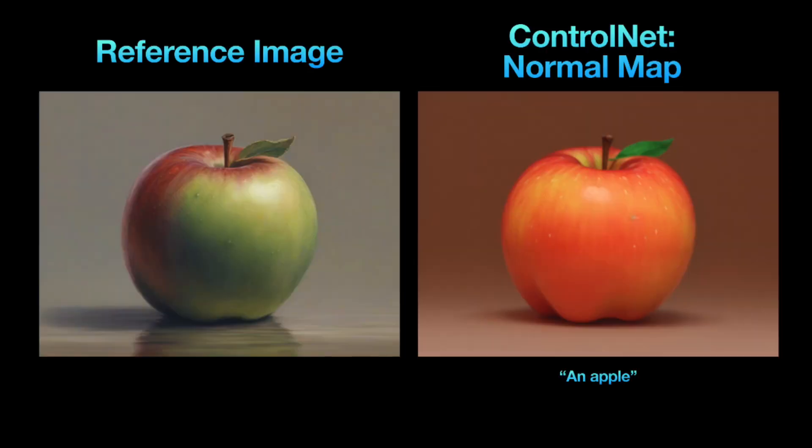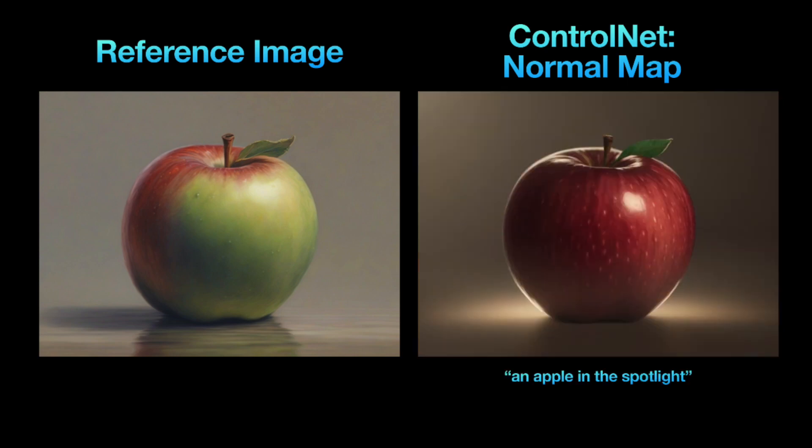The normal map in ControlNet looks at a flat surface, figures out the direction each element should point, and gives you more control over light reflections — it mimics where reflections should be. This is handy for highlighting the main focus of an image. When I used the 'An Apple' prompt with the Normal Map option, Leonardo completely changed the lighting while keeping the apple's shape intact. In another example, my apple is in the spotlight, and once more it changed the lighting while keeping the apple the same.